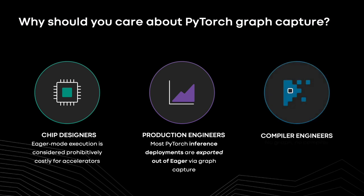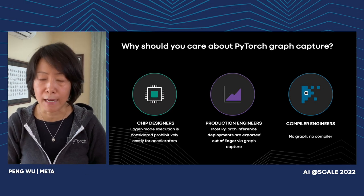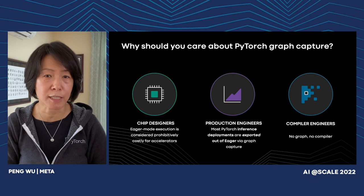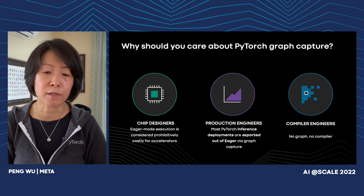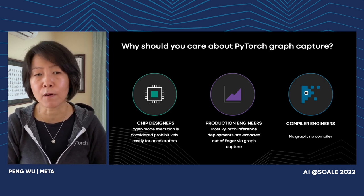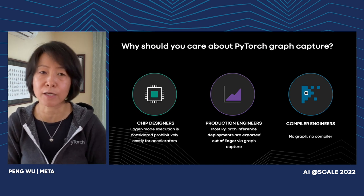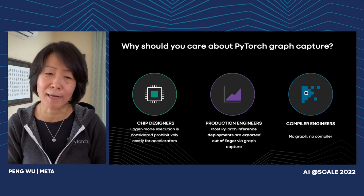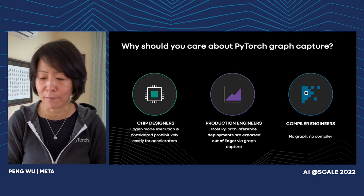Who should care about PyTorch graph capture? Chip designers — because for accelerators, even very powerful ones like GPUs, eager mode execution one op at a time could be prohibitively expensive. Accelerators usually prefer to have multiple ops or even the entire model completely offloaded to the hardware, which is why graph capture is really important. Production engineers also care, since most PyTorch inference deployments at scale use export mode with whole graph capture for more efficient execution. And for compiler engineers, it's very simple: without a graph, there is no compiler to talk about.